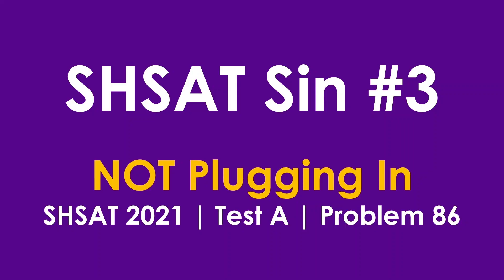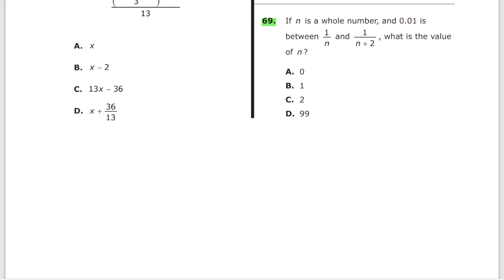SHSAT sin number three is not plugging in. We are going to cover problem number 86 from test A of SHSAT 2021. If n is a whole number and 0.01 is between 1 over n and 1 over n plus 2, what is the value of n? Difficult. It's a difficult problem. You got 1 over n, you got 0.01 which is really 1 over 100, and then you get 1 over n plus 2. Like what is it? How to solve this?